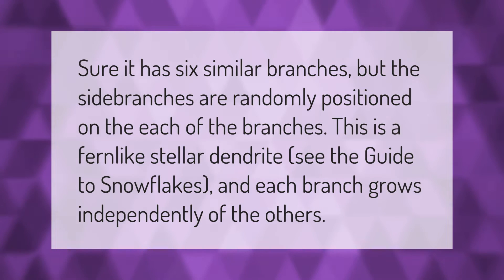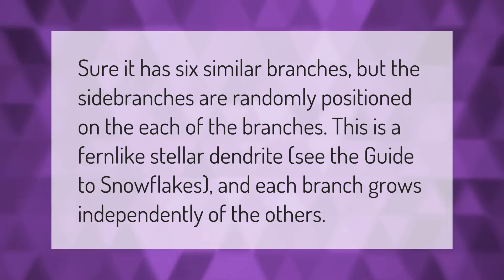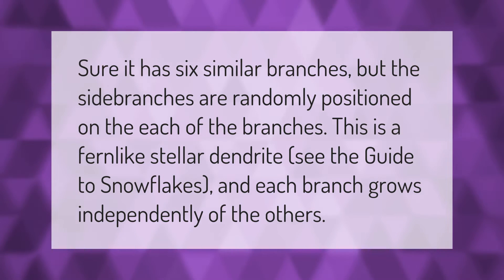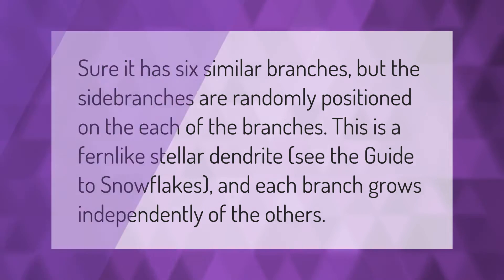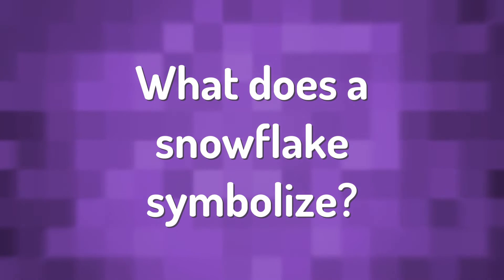It has six similar branches, but the side branches are randomly positioned on each of the branches. This is a fern-like stellar dendrite — see the guide to snowflakes. Each branch grows independently of the others.